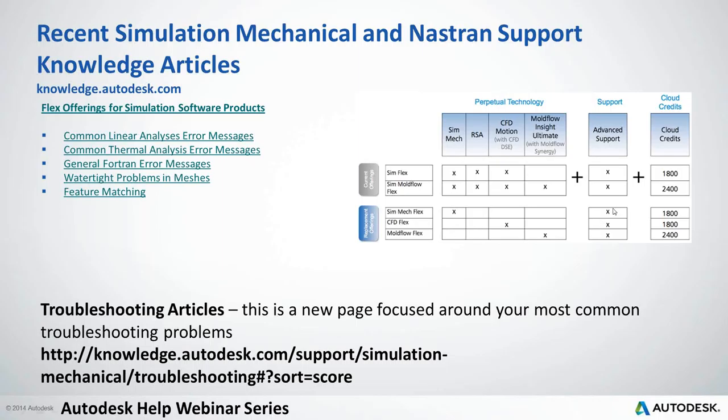We can see here that we don't have a Simulation Robot Structural Flex option, but now we do have the SimMec Flex, CFD Flex, and Mold Flow Flex. All those still do include advanced support so you get access to web and phone support and varying amounts of cloud credits. So at this point, I'm going to hand it over to Mitch. And Mitch is going to run through what's new in Autodesk Nastran 2016 and Autodesk Nastran NCAT 2016.